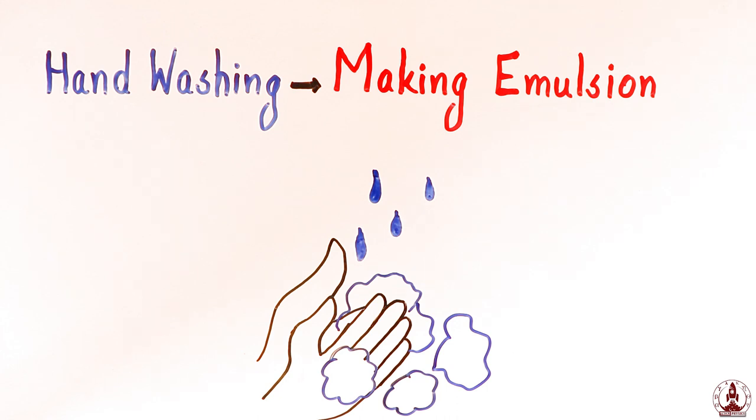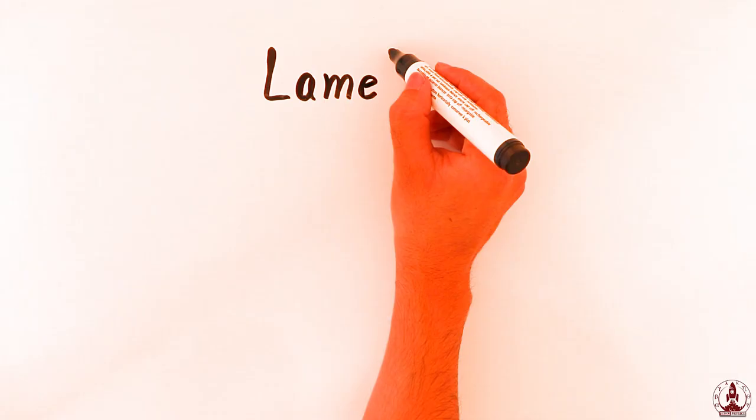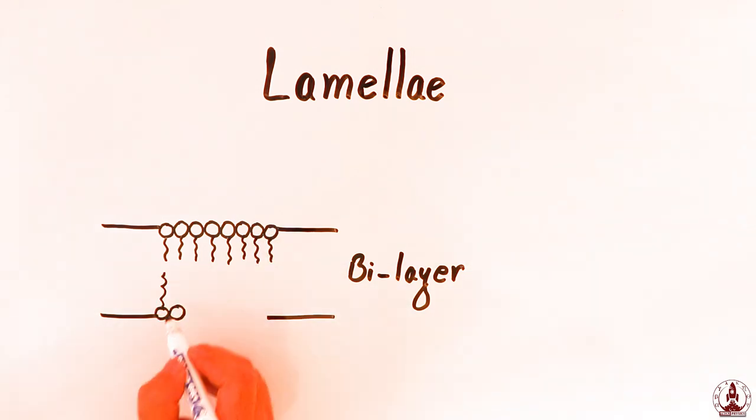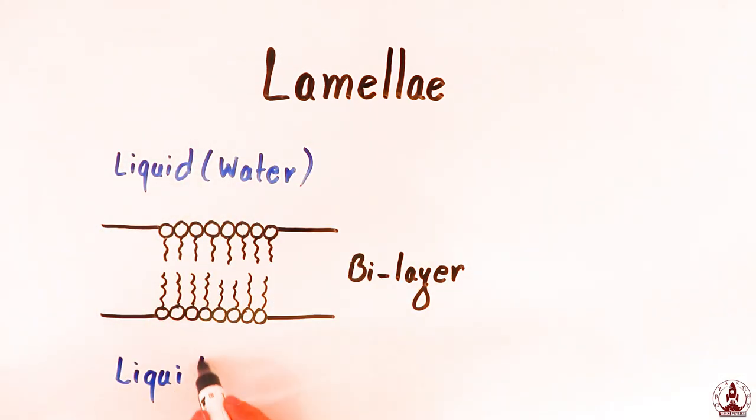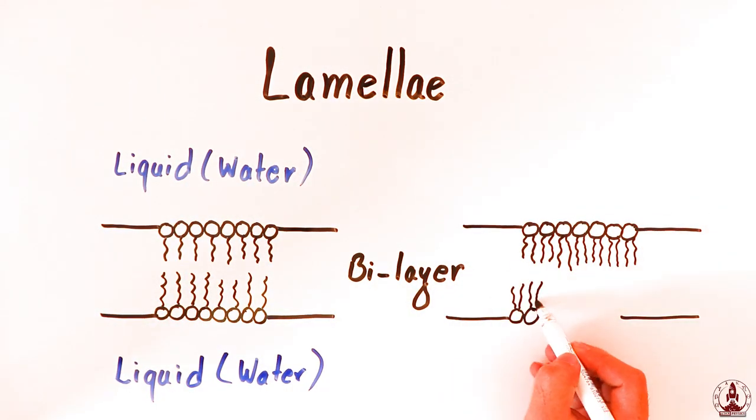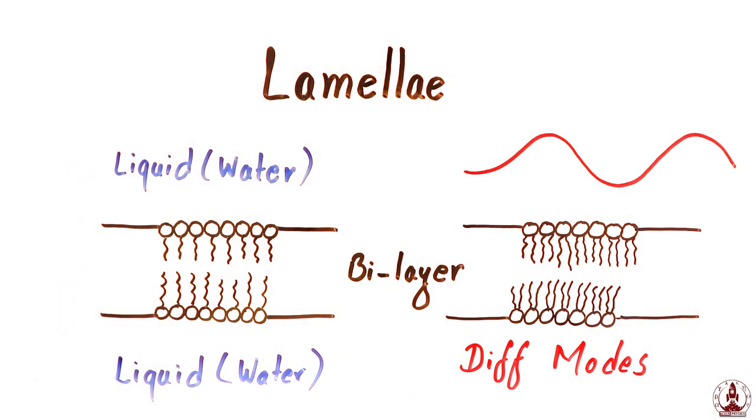Another important structure you can make from surfactants is lamellae. Yes, some fancy name for a bilayer structure made by two linear sets of surfactant molecules. Such bilayer structure can sometimes even show the property of a wave with the existence of different modes.